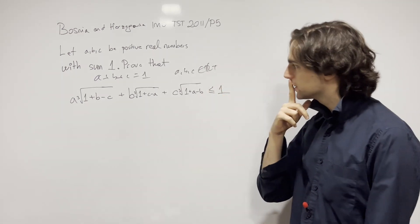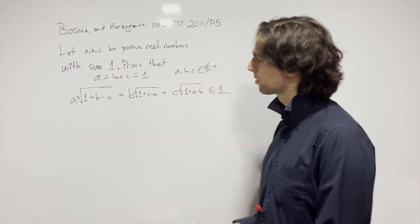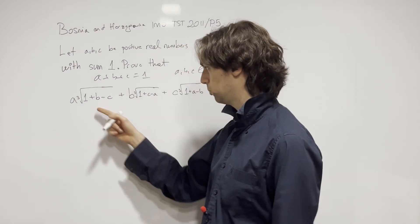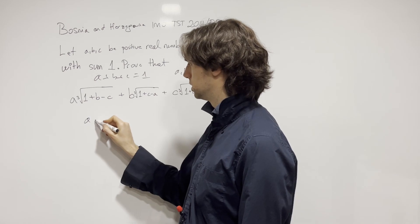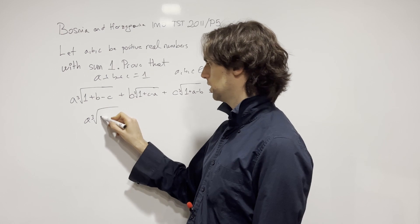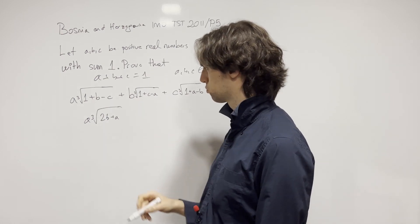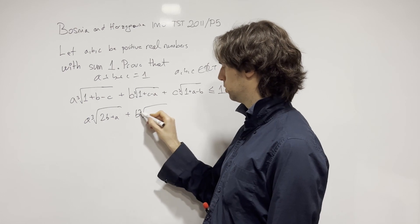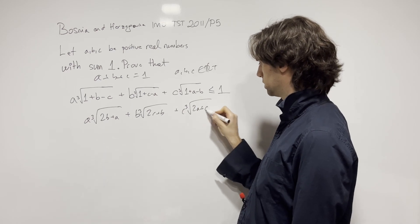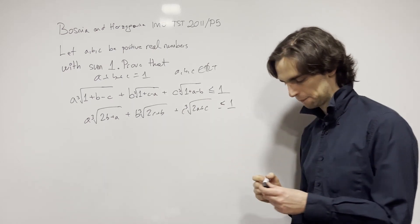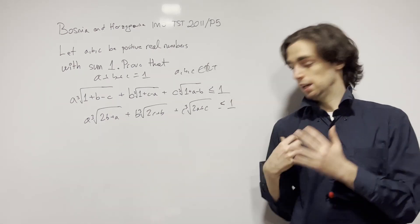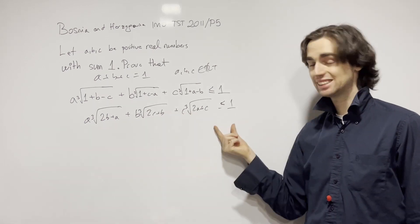Well, first thing is thinking about the cube root, right? What is this? So one way that we can see what this is, is by plugging in. 1 is equal to A plus B plus C. So this is A cube root of A plus B plus C. The C cancels out. We'll get 2B plus A. And then similarly with B, cube root of 2C plus B. Then C cube root of 2A plus C needs to be less than or equal to 1. Yeah, that's what this is. All of these things are positive.